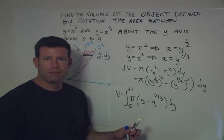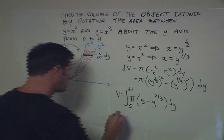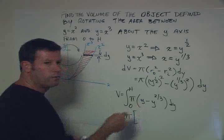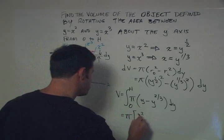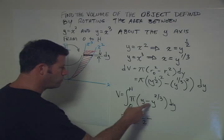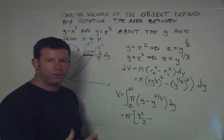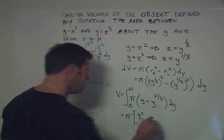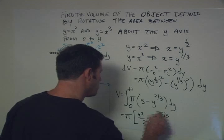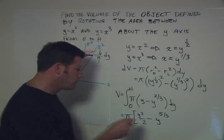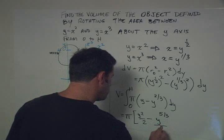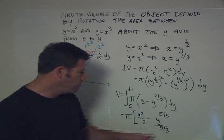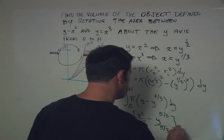And we know the integral of y is y squared over two. And the integral of y to the two-thirds. Well, now we have to add one. So two-thirds plus one is two-thirds plus three-thirds, which is five-thirds. And then we have to divide by n plus one. So this is going to be over five-thirds. Now we have our good friend the fraction over a fraction. We'll deal with that in one second. Evaluated from zero to h.